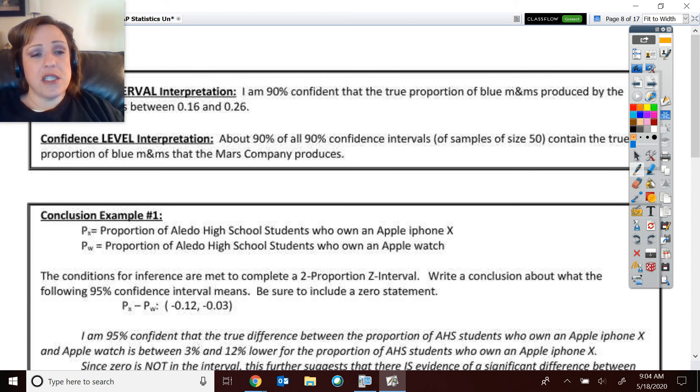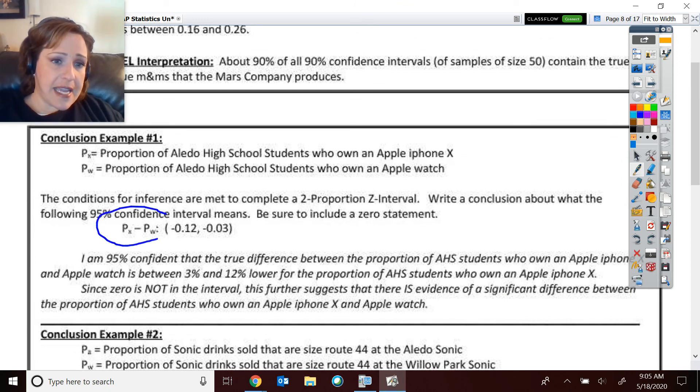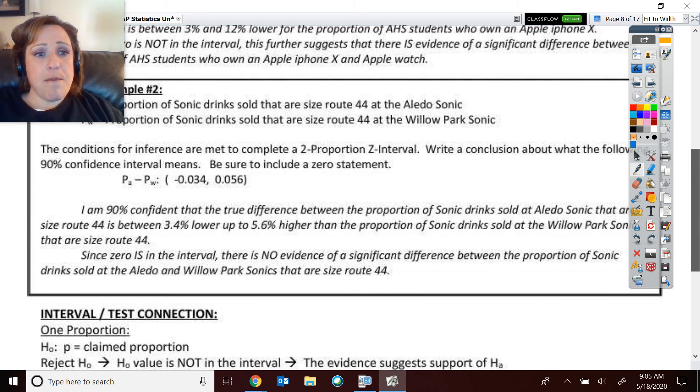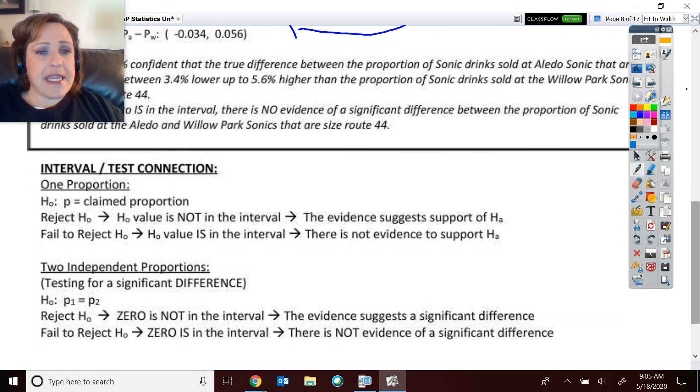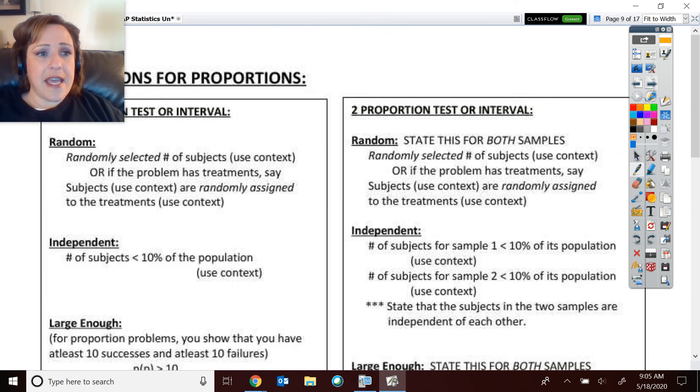And then I really just thought this was so valuable. I pulled all of this directly from these unit reviews. So here's actual examples of written out interval and levels, including, look here, these, like, how you would do for two different proportions. And making that connection, and don't forget your zero statement, whenever it's about a difference. And then making that connection between if you rejected the null hypothesis, what does that say about the number? Is it in the interval or not? So that interval and test connection. And then that conditions for one and two proportions.